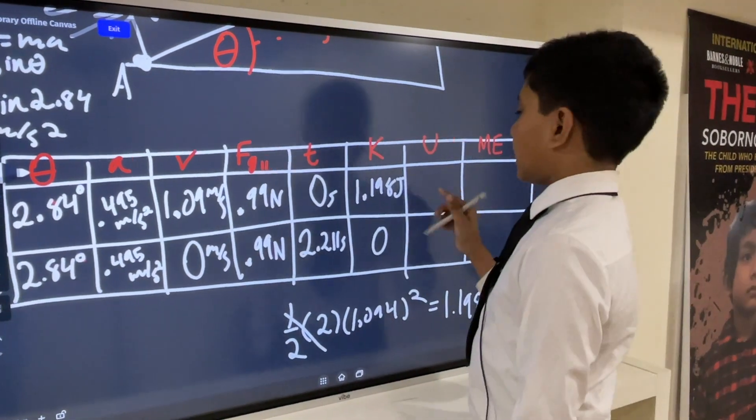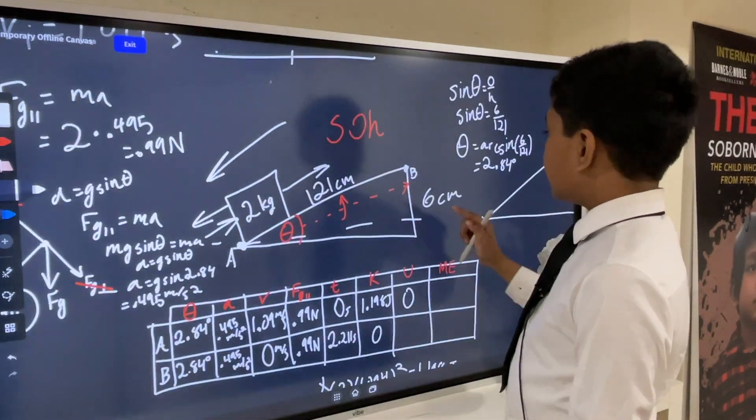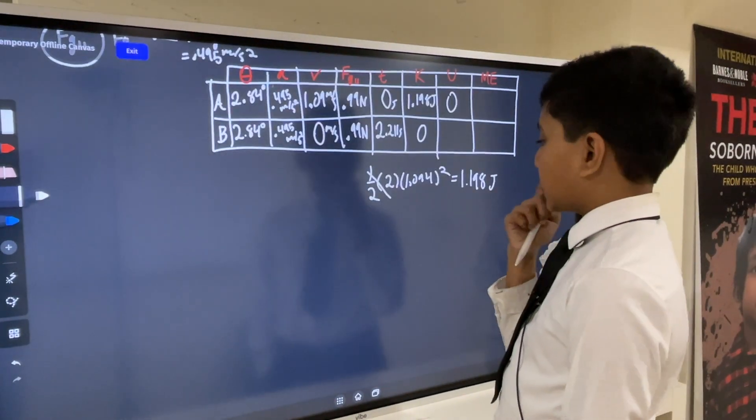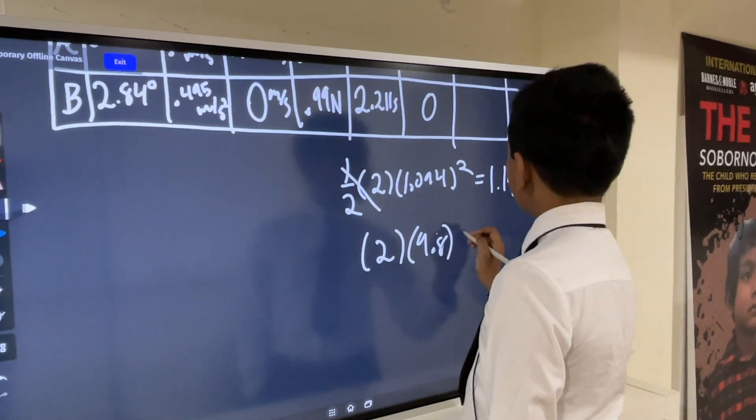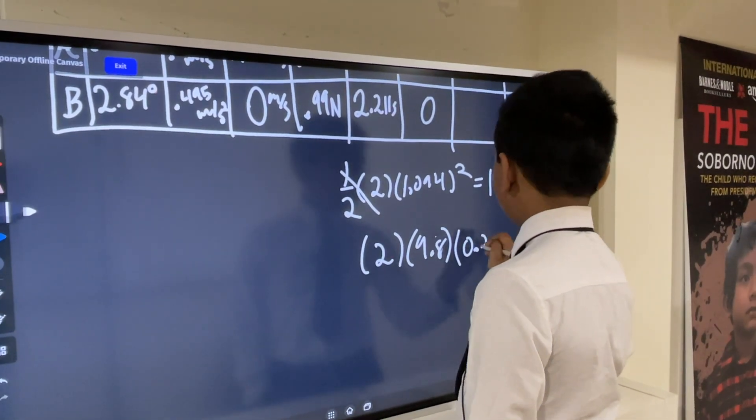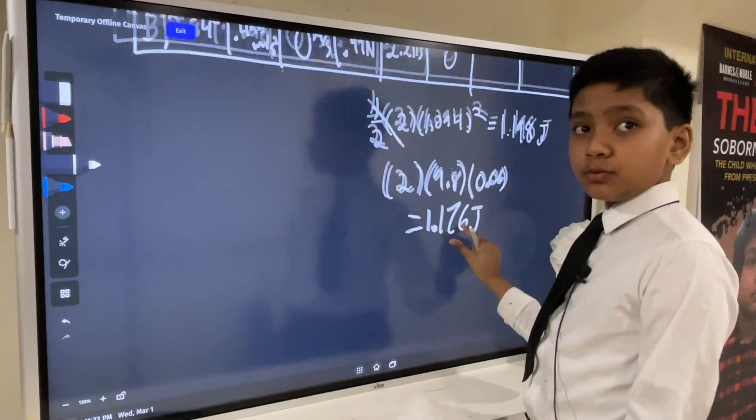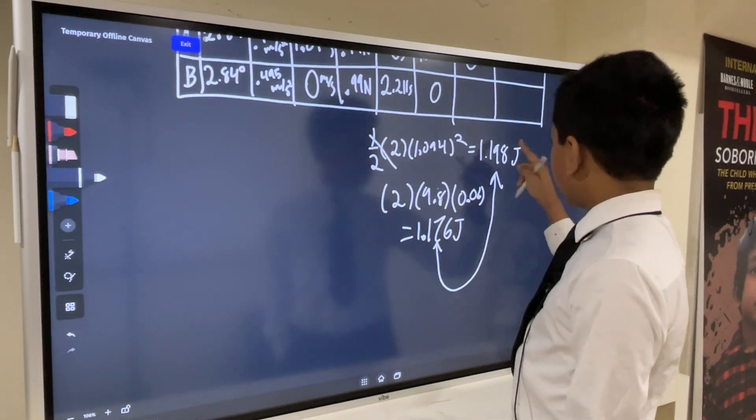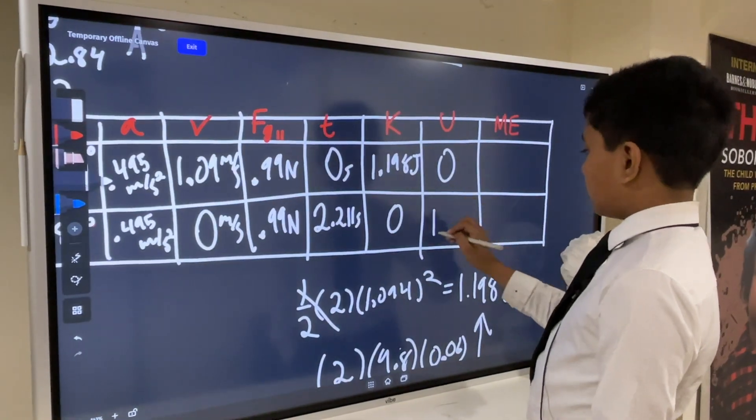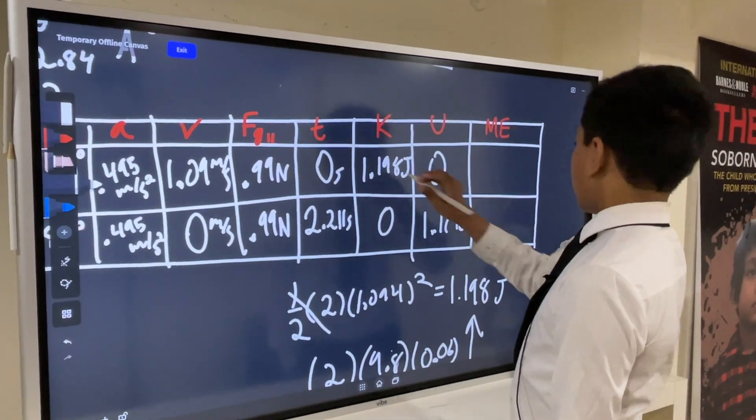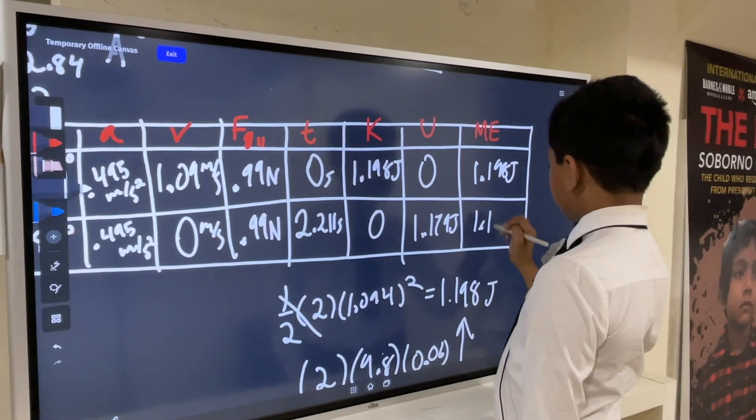Now, at A, it has not gained any height because this is our y equals 0 line. But at B, it's gained 6 centimeters of height. We can express this as M times g times 0.06. This is 1.176 joules, which is pretty close to the value of 1.198 we got earlier. But some of that energy was probably lost in other sources. And now, mechanical energy is just the sum of K and U. 1.198 joules and 1.179 joules.